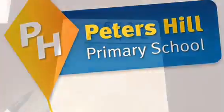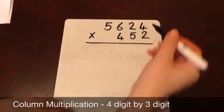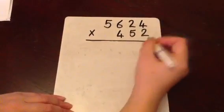Column multiplication, 4 digit by 3 digit. As in all the previous steps we begin with the units column.